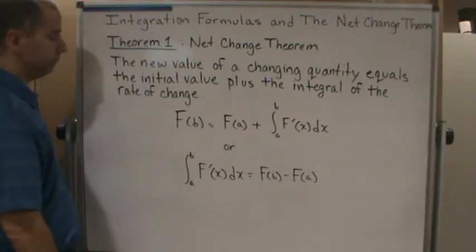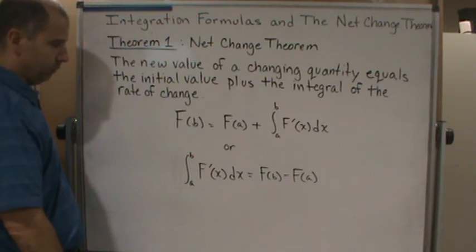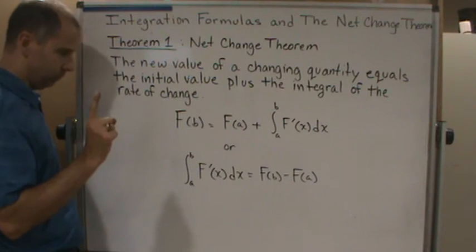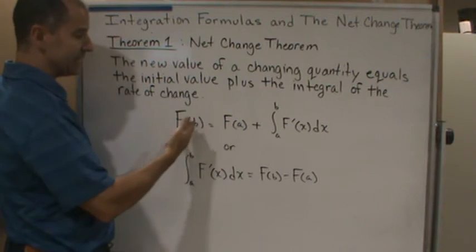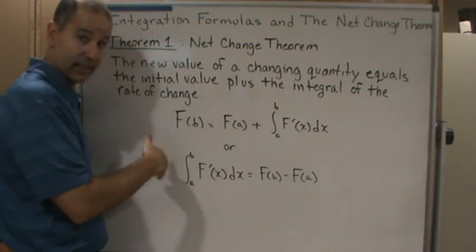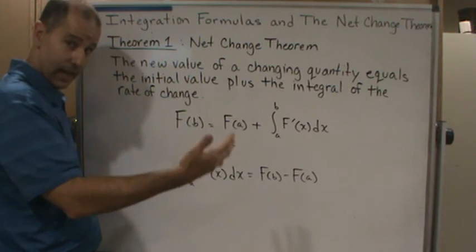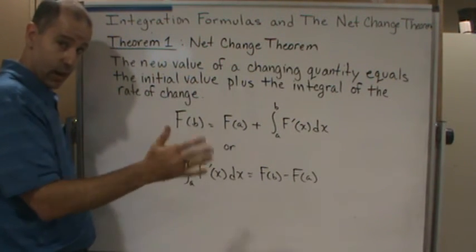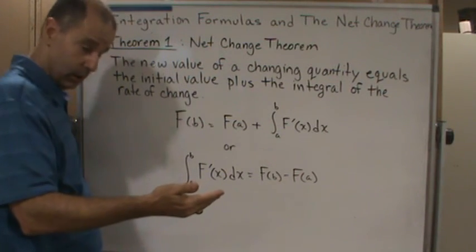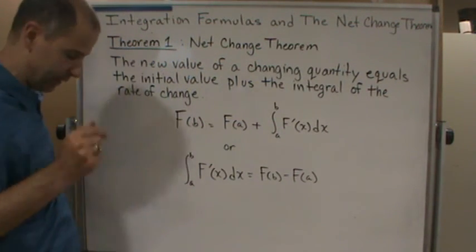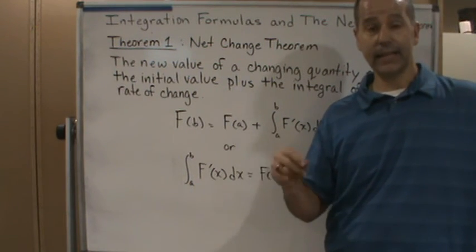There are lots of applications for this. Keep in mind that this gives you net change, which means it takes into account negative and positive values of, say, velocity. It automatically accounts for direction. If you want total change, you would have to use the absolute value, just like when we talked about net signed area versus total area.